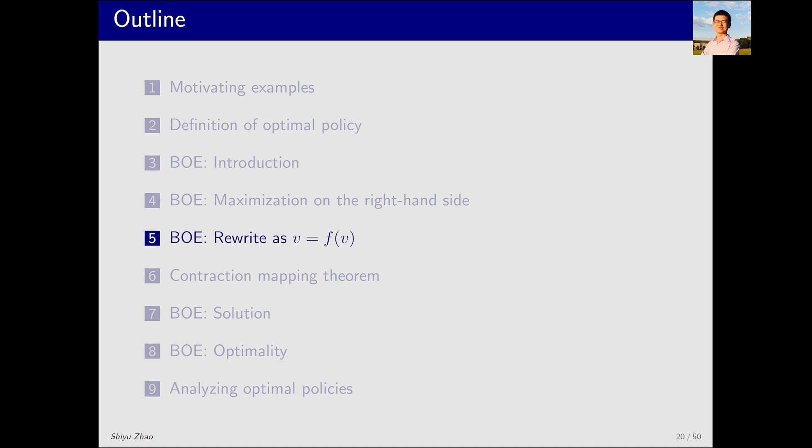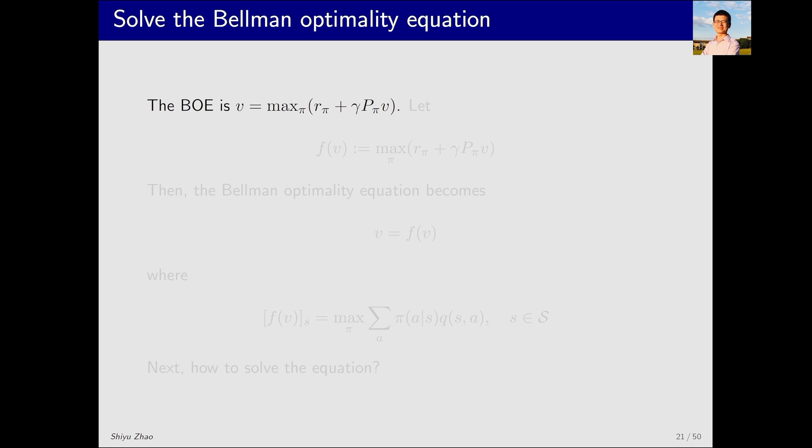Now, let's continue with our analysis. We've already introduced how to deal with the max pi on the right-hand side. In fact, we can express this max pi as a function, denoted as f. Why so?